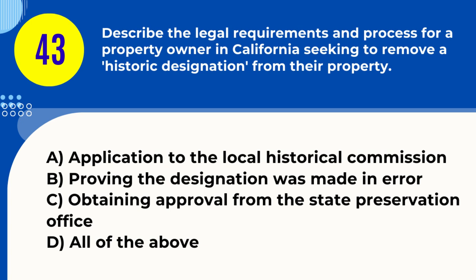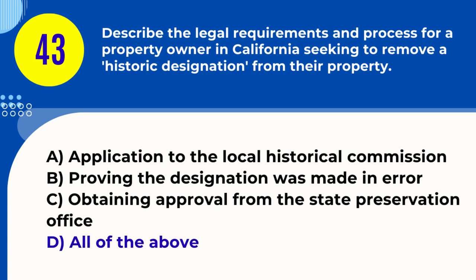Question 43. Describe the legal requirements and process for a property owner in California seeking to remove a historic designation from their property. A. Application to the local historical commission B. Proving the designation was made in error C. Obtaining approval from the state preservation office D. All of the above. Answer: D. All of the above. Explanation: Removing a historic designation involves applying to the historical commission, proving an error in designation, and possibly state approval.